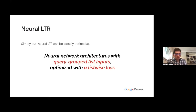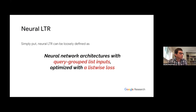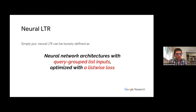Neural learning to rank can be loosely defined as neural network architectures with query-group listwise inputs optimized with a listwise loss. We assume inputs are not just individual items but are based on a query — we have a query and a list of candidates — and the overall loss is optimized using a listwise loss. In some sense, neural learning to rank is a specific instantiation of general learning to rank using neural nets.